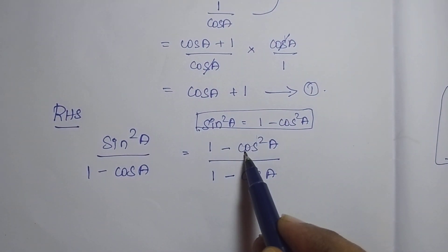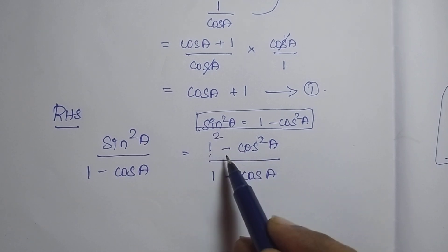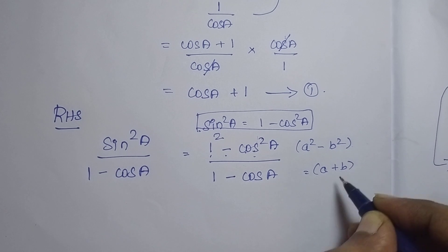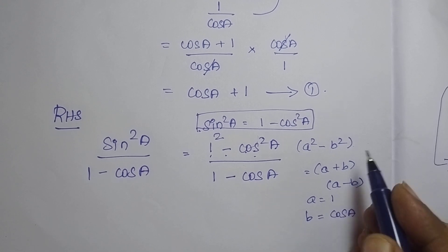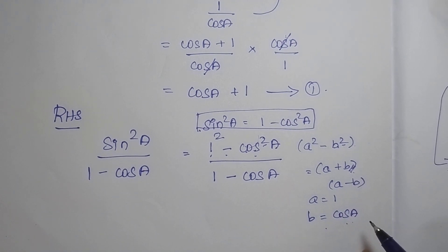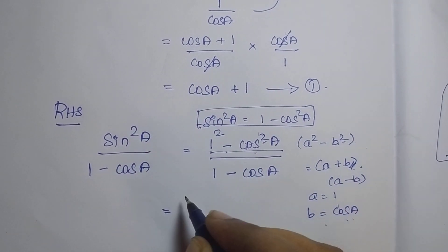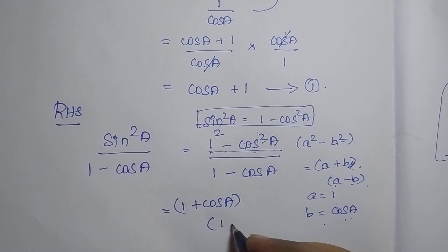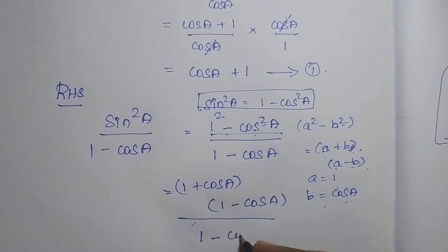If you see here, this is cos square A, and 1 square is also equal to 1. So this is in the format of A square minus B square, which is equal to A plus B into A minus B. Here, A is equal to 1 and B is equal to cos A, because cos square is B square. So I am going to apply this formula here. This becomes 1 plus cos A into 1 minus cos A, whole divided by 1 minus cos A.